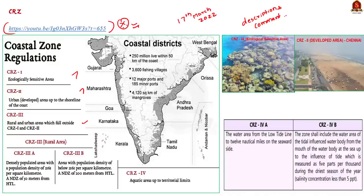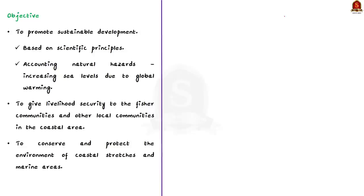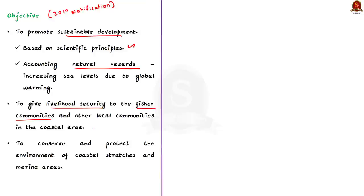Now let us focus on the Coastal Regulation Zone Notification 2019. Its first objective is to promote sustainable development based on scientific principles, taking into account natural hazards such as increasing sea levels due to global warming. The second objective is to give livelihood security to fisher communities and other local communities in coastal areas. Its main objective is to conserve and protect the environment of coastal structures and marine areas of India.